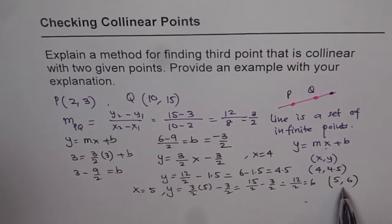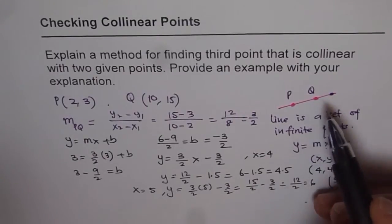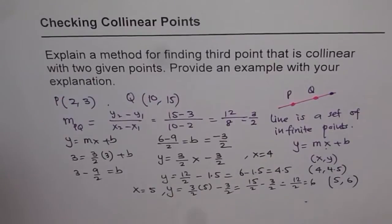So that is how you can get more and more points on the same line. And all these points, since they fall on the same line, they are all collinear. So that's one way of doing it. The other way is to find a point on a line. So this is actually the best way of doing it.